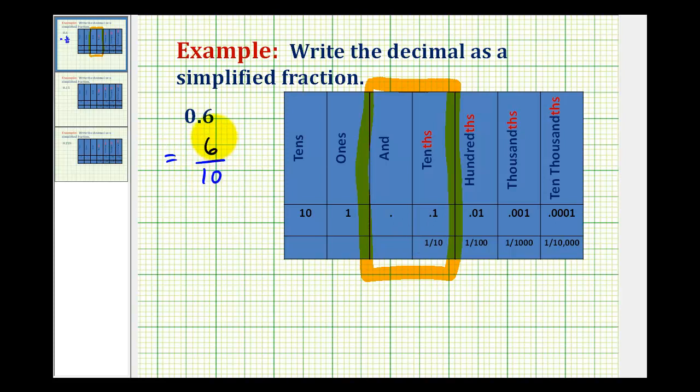And now this fraction is not in simplest form because six and ten have a common factor of two. You can write six as two times three and ten as two times five. So this two over two simplifies to one. So the simplified fraction for 0.6 is three fifths.